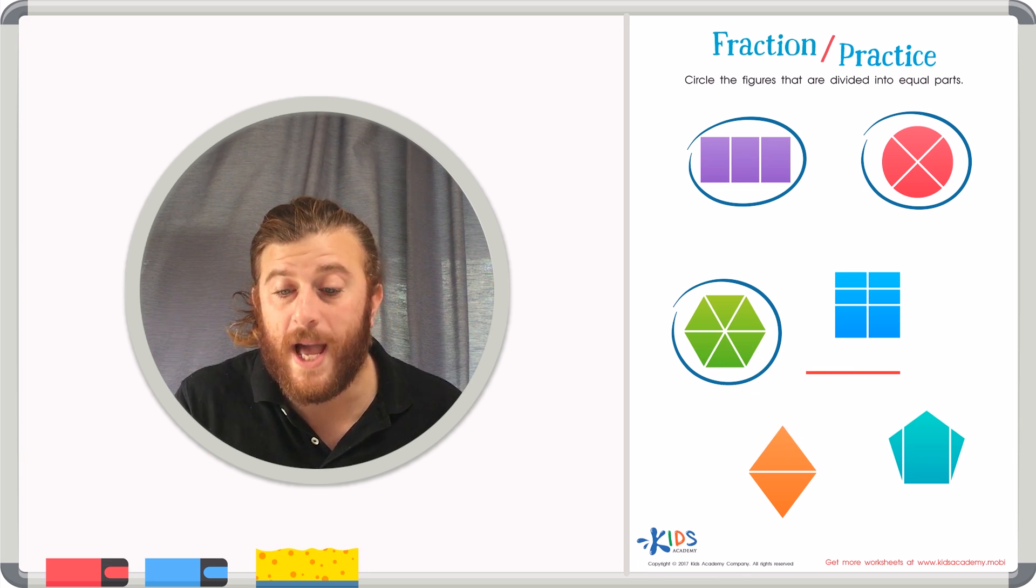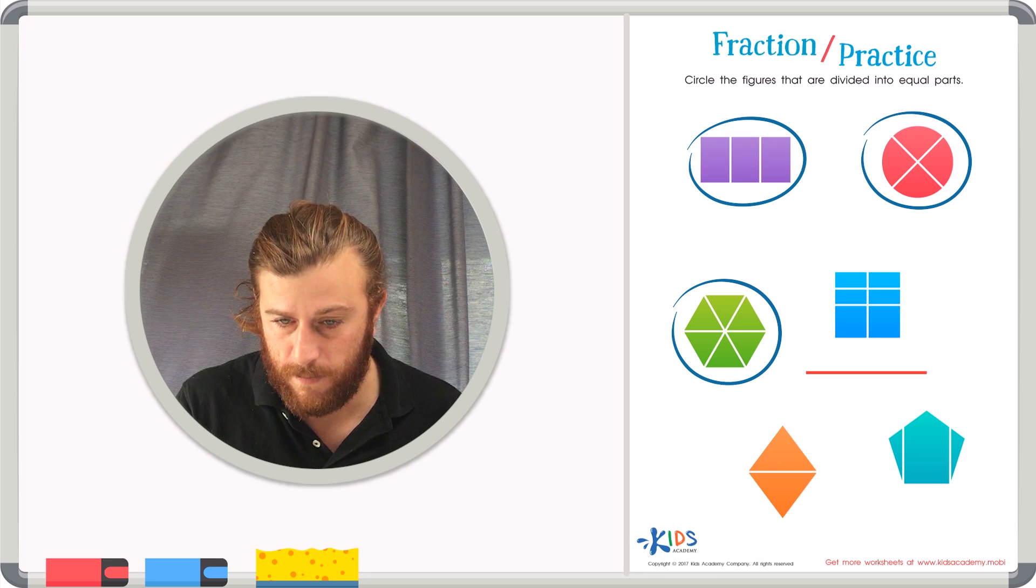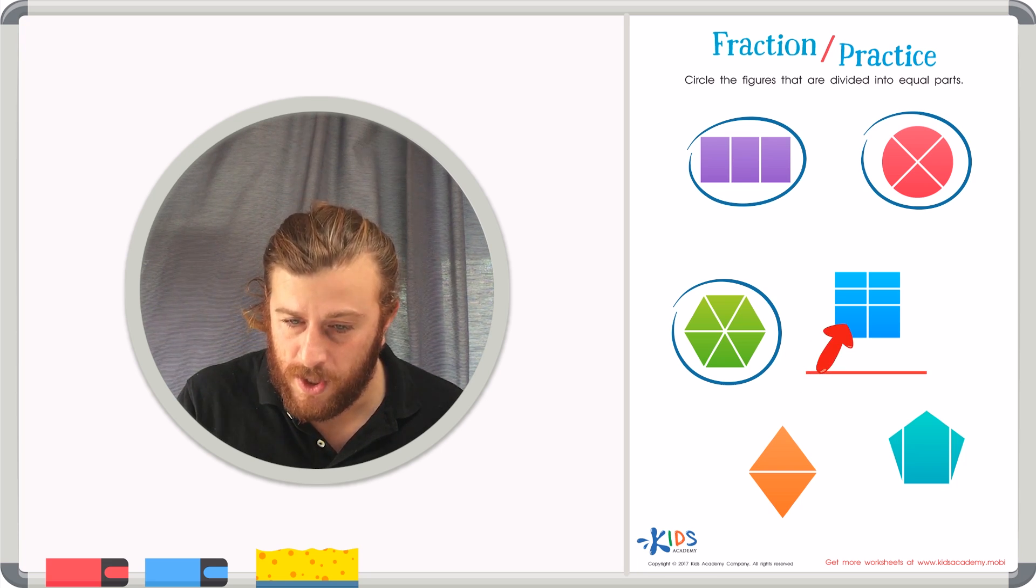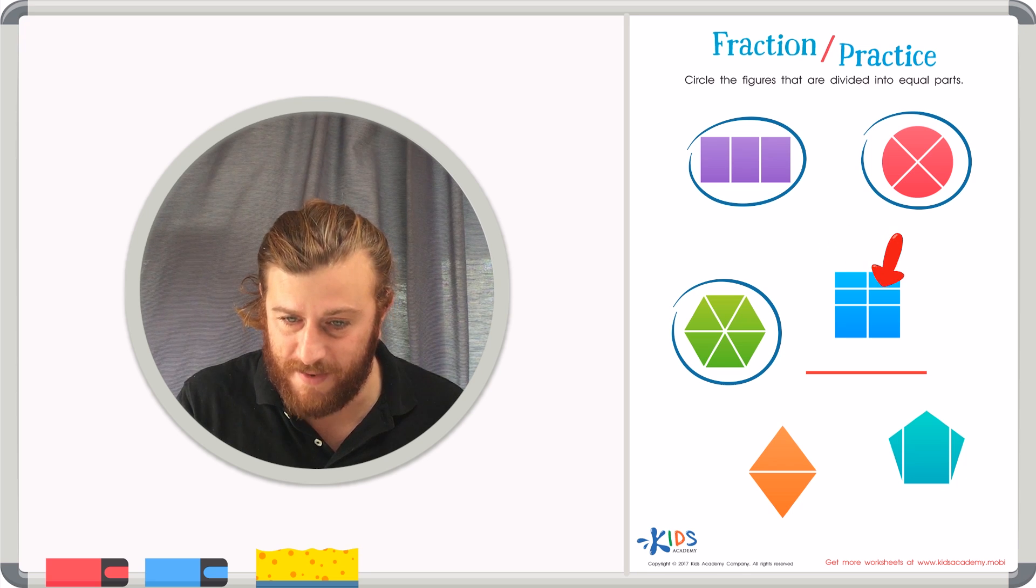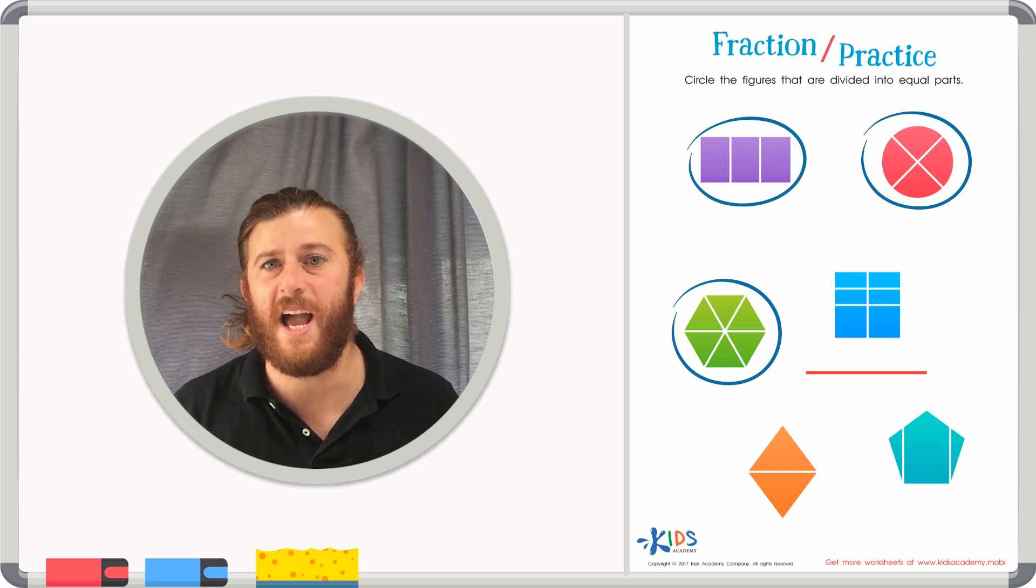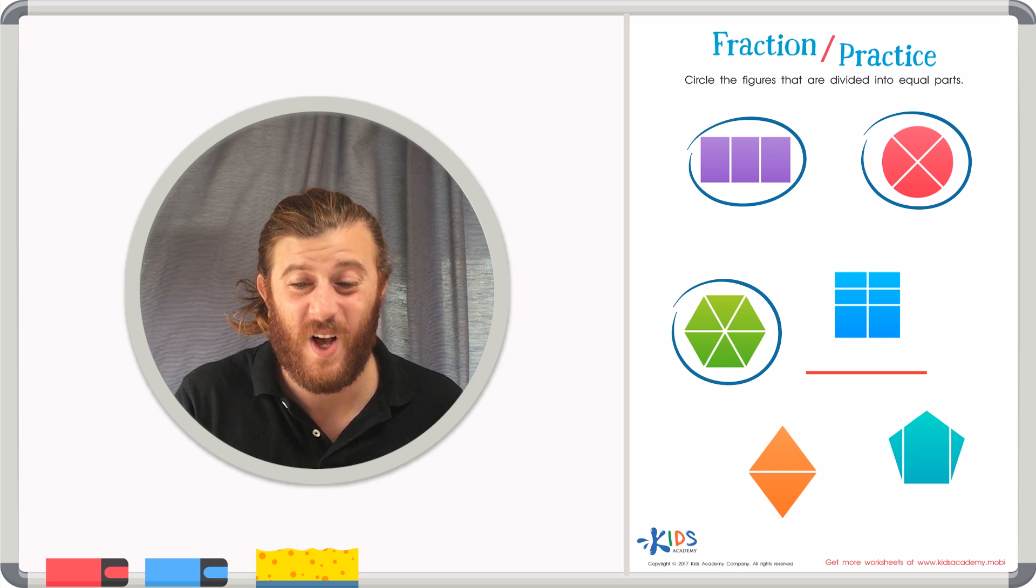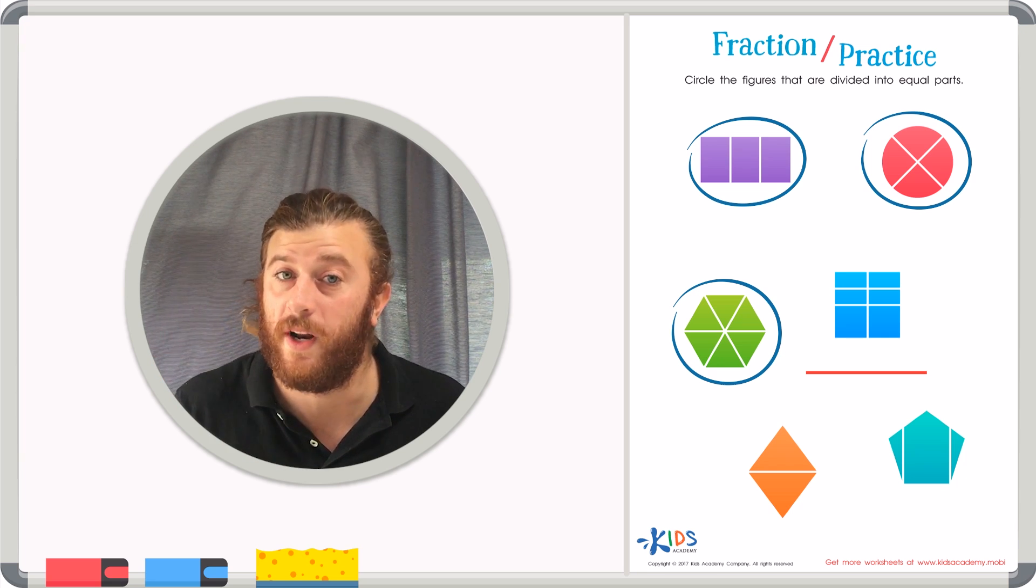Our next shape, we have another rectangle. In this rectangle, I see one, two, three, four, five, six parts. That's okay, a rectangle could be broken up into many different parts. But, are all these parts equal to one another?